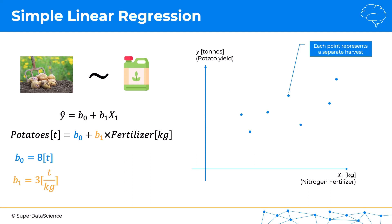Each data point represents a separate harvest on the farm. Multiple times potatoes were harvested over many years, and the farmer recorded how much fertilizer they used and how many potatoes they were able to harvest in that specific season. What this equation represents is a sloped line that goes through our points. The y-intercept is here — that's our eight tons.